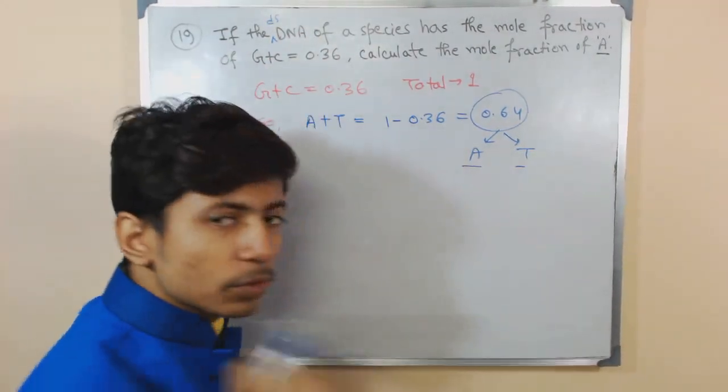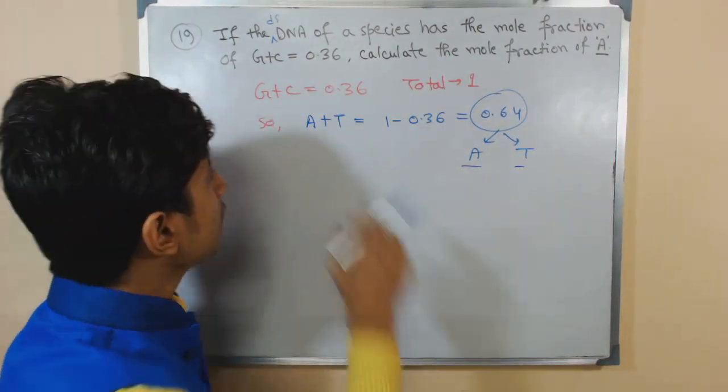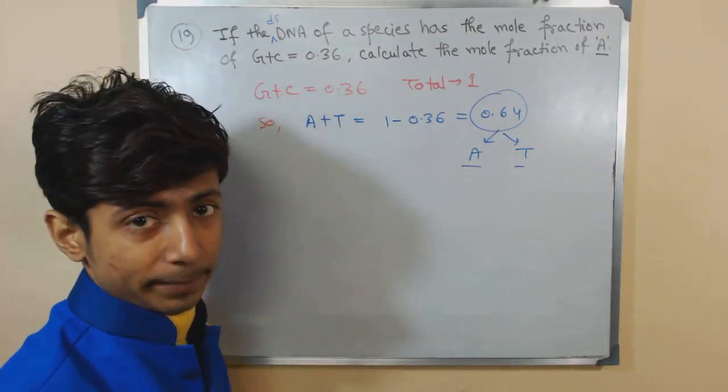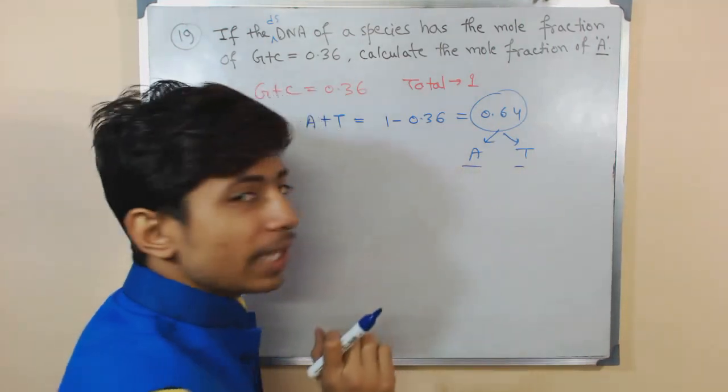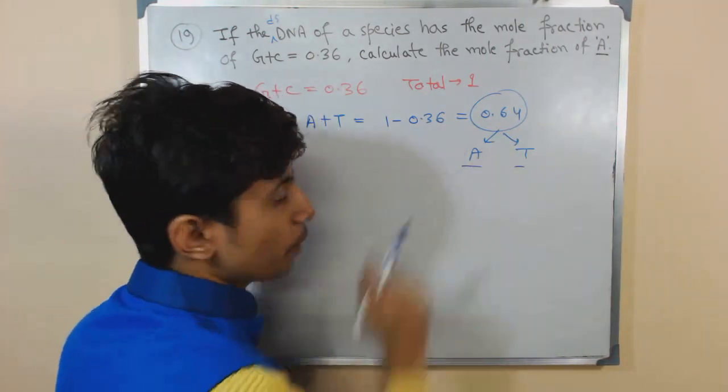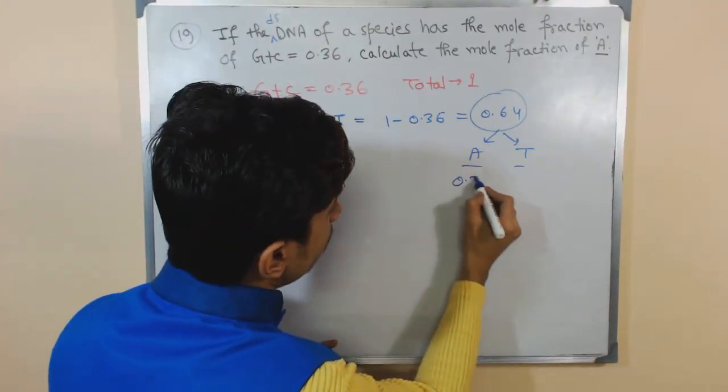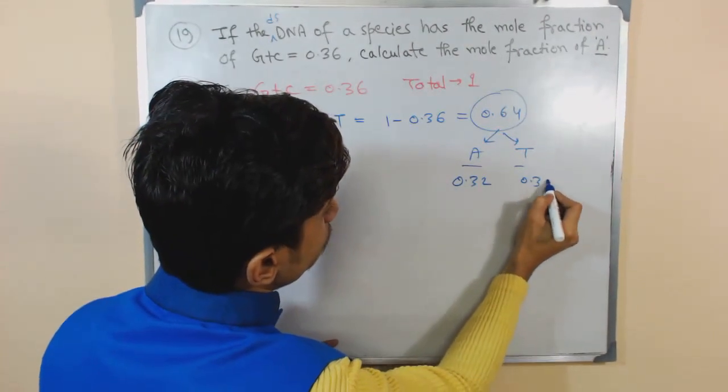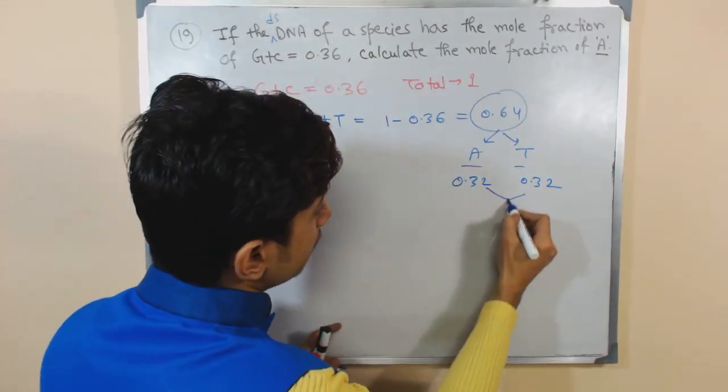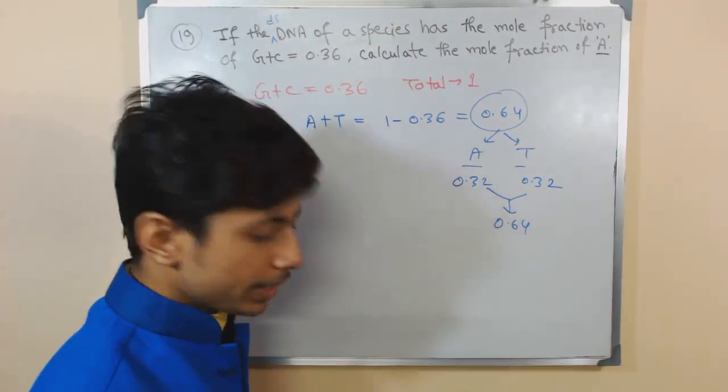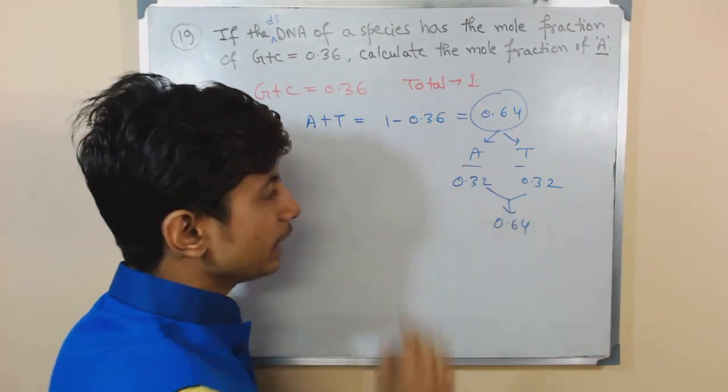The ratio of adenine and thymine will be the same; similarly, the ratio of guanine and cytosine will be the same. So to make adenine and thymine have the same ratio from 0.64, it should be 0.32 each. That's why adding them together we get 0.64.